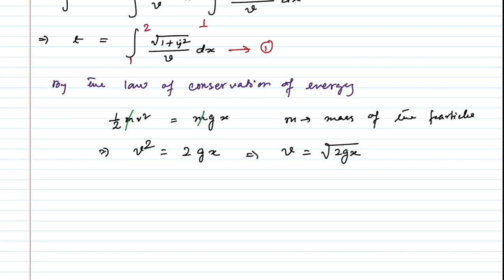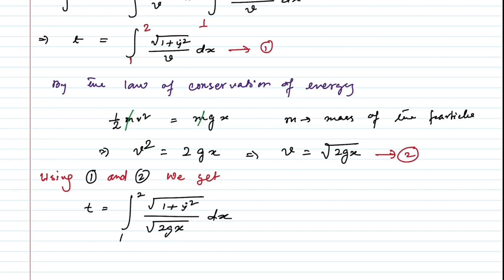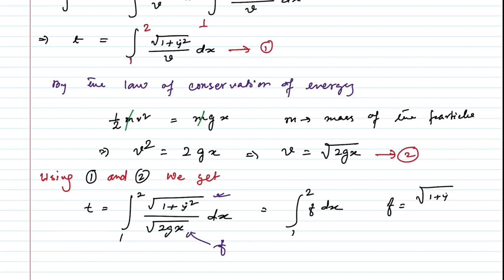Using equation 2 in equation 1, we get T = ∫₁² √(1 + ẏ²) / √(2gx) · dx. We define F = √(1 + ẏ²) / √(2gx), so T = ∫F dx.